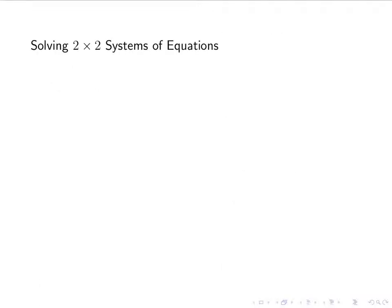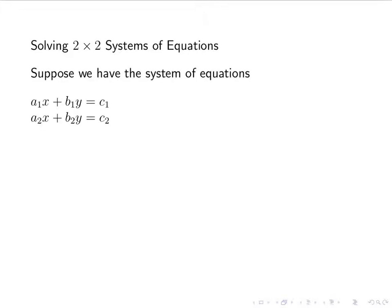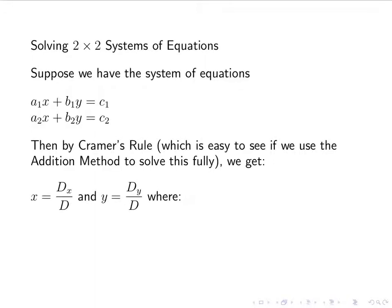The real reason we care about these matrices is to find another way to solve 2 by 2 systems of equations. If we have a system, we know how to solve them from TechMath 1 — by graphing, using the addition method, or using the substitution method. Here we're going to come up with another method called Cramer's Rule, which is derived from the addition method.